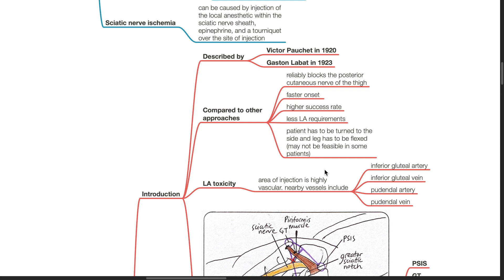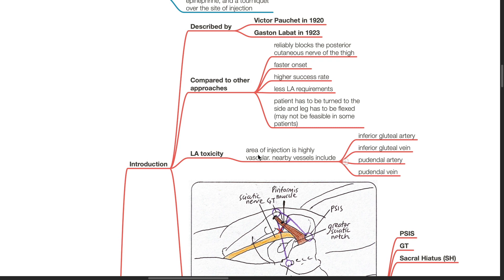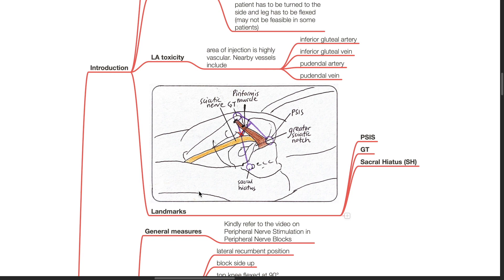Take note of LA toxicity, as the area of injection is highly vascular. Nearby vessels include the inferior gluteal artery, inferior gluteal vein, pudendal artery, and pudendal vein. Important landmarks include the PSIS, the greater trochanter (GT), and the sacral hiatus (SH).